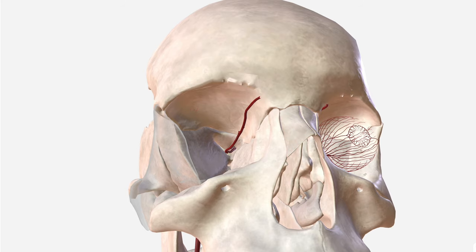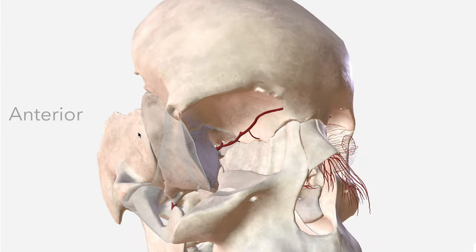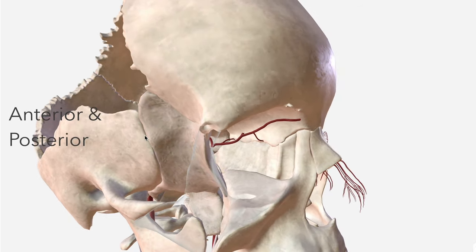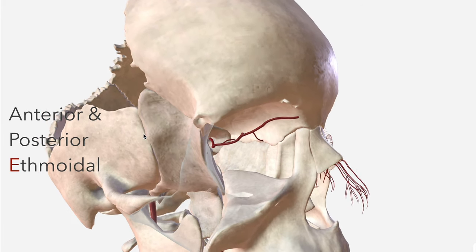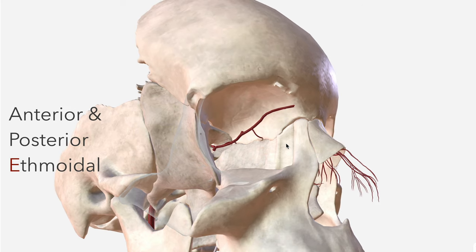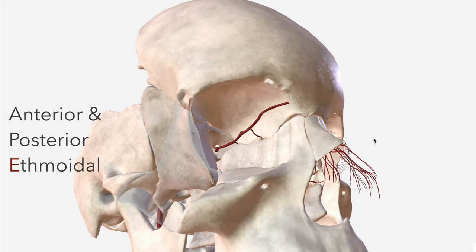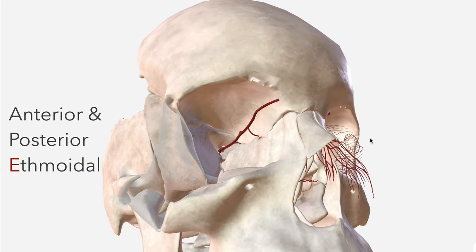The next branches of the ophthalmic are perhaps the most complex, so we're going to remove the dorsal nasal so that we can make them out a bit clearer. They are the anterior and the posterior ethmoidal arteries, which both depart the ophthalmic to be transmitted through the spaces between the ethmoid and the frontal bones.